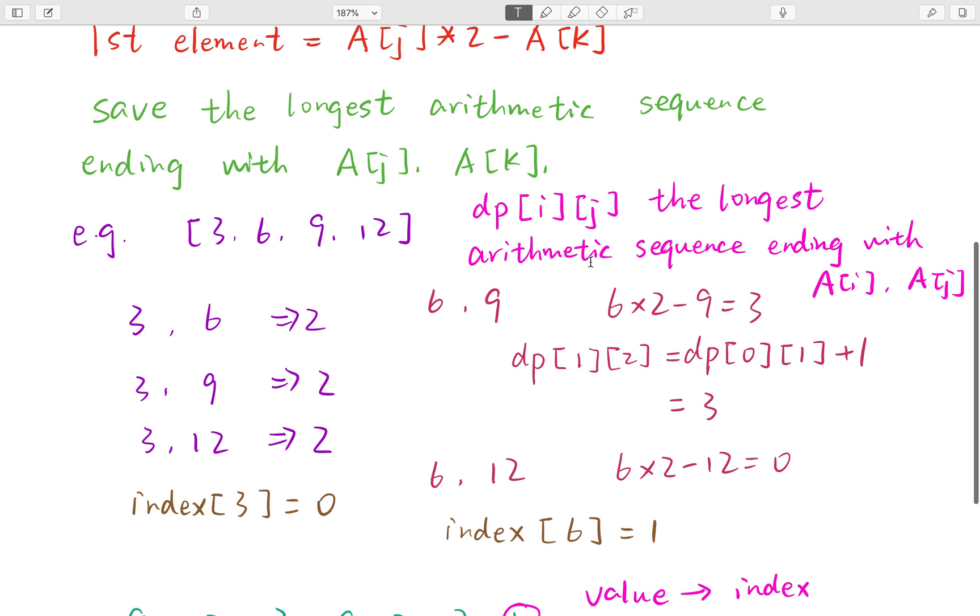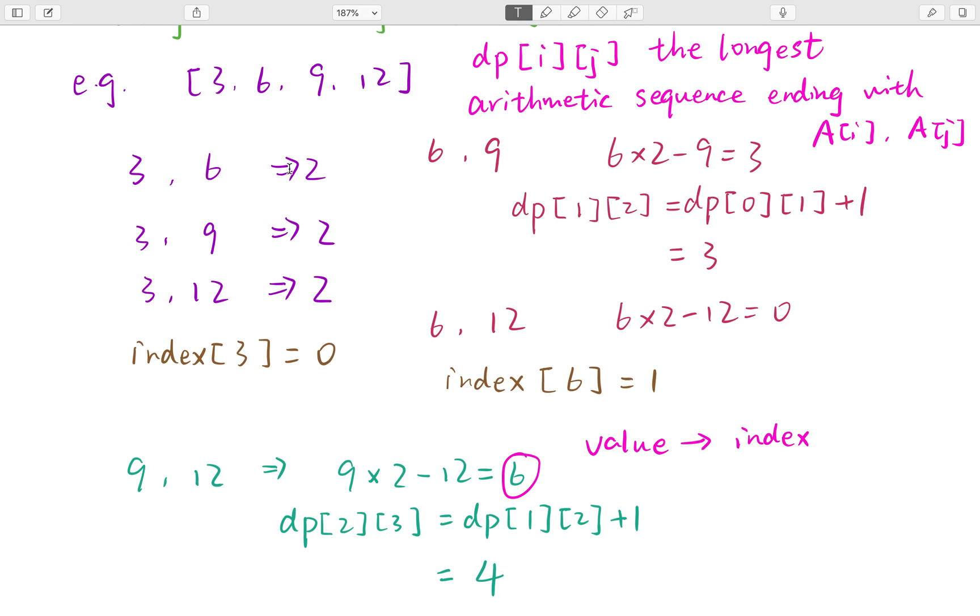In that case, we will construct a DP array, which means the longest arithmetic sequence ending with a[i] and a[j]. You should notice that this is the index in the given array A. Okay, so let's run this example.